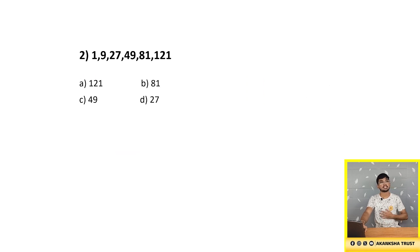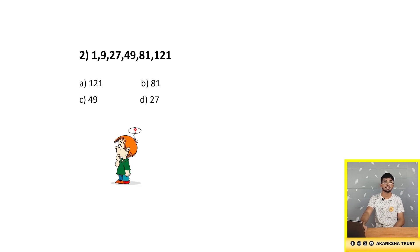Let's move on to the next question: 1, 9, 27, 49, 81 and 121. We need to find out which number is wrong.